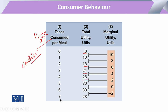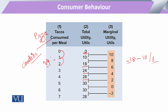And like this, when he consumes seven units, at that time the utility is 28. Now if we look at the point between 0 and 1, the marginal utility is 10. And between 1 and 2 — from 10 to 18 — this is 18 minus 10 divided by 1. So the change in total utility divided by the change in quantity gives us 8.